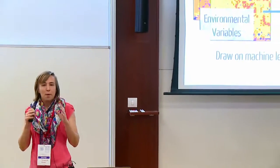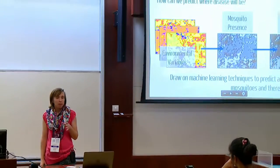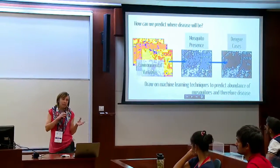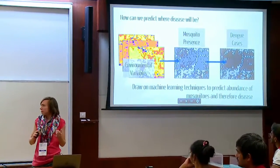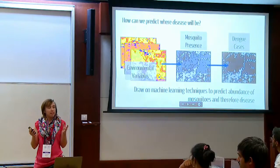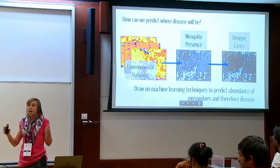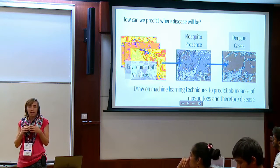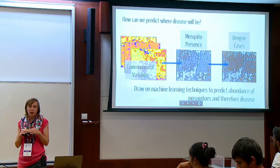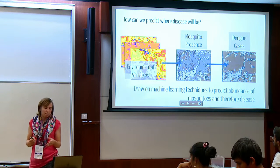Given the rapid urbanization we're seeing globally, a lot of work has gone into trying to predict where Dengue outbreaks might happen. Briefly, we use correlational statistics to relate environmental variables such as temperature, rainfall, and vegetation to data on mosquito presence and Dengue cases. Because Dengue is often under-reported and we don't have case data everywhere, this allows us to make a smooth risk map and identify hotspots in areas where we might not have data.